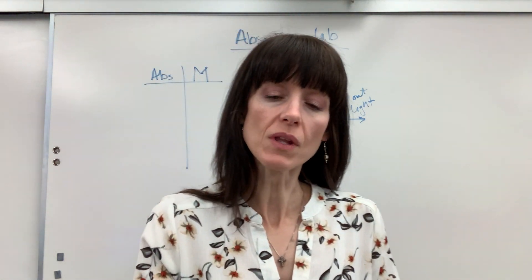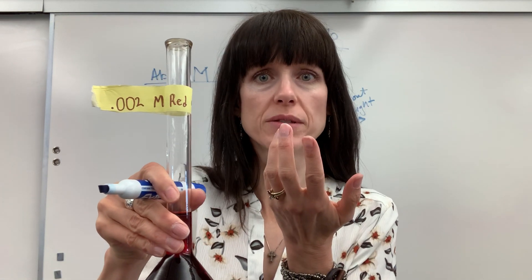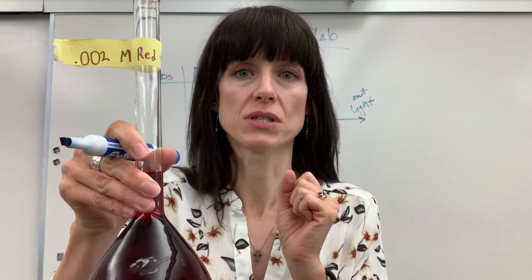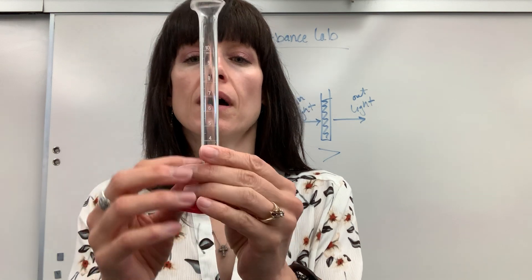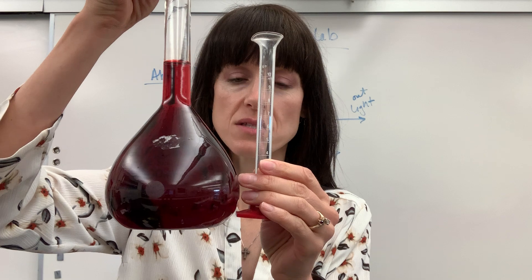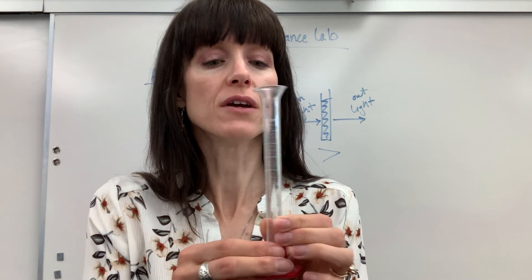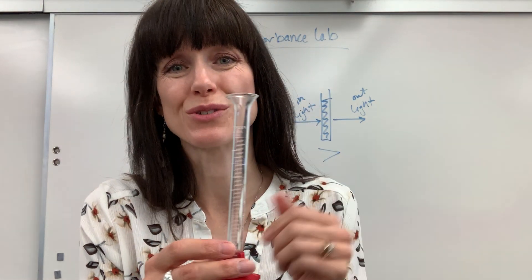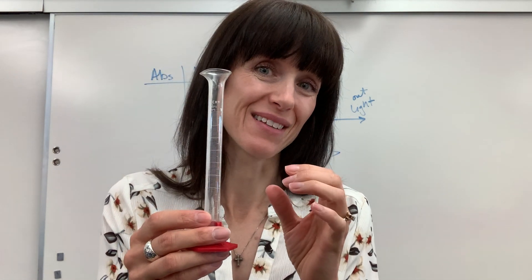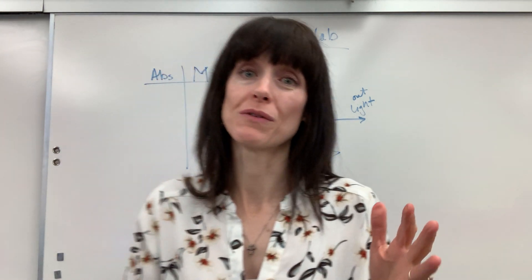Here's how you do it. You take your stock solution — in this case 0.002 molar — and start making some dilutions. With safety glasses on, I would pour five mils of Red 40 into a graduated cylinder, then add distilled water and bring it to a volume of 10 mils. A volumetric flask would be even more accurate, but I have my students use a graduated cylinder since my classroom doesn't have tiny volumetric flasks.